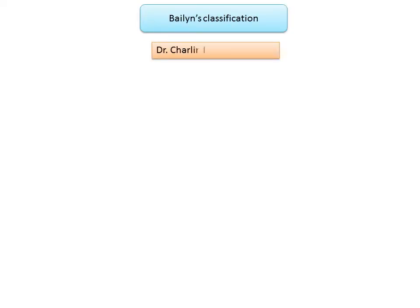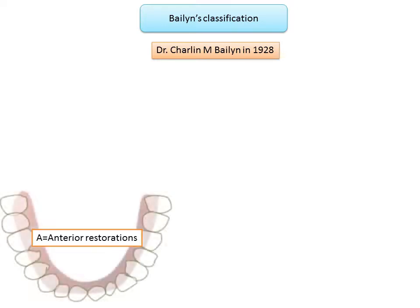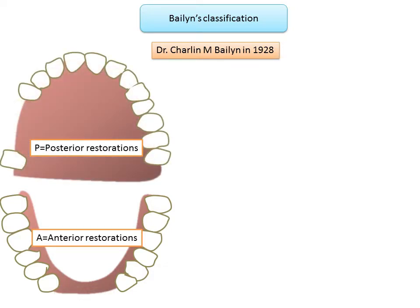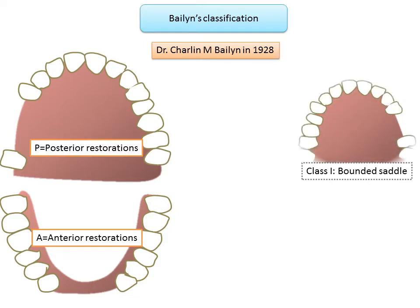The next one is Balen's classification, proposed by Dr. Charlin M. Balen in 1928. It is the first classification which gives importance to support of partial dentures by the remaining tissues. Descriptive letters are used to represent the anterior and posterior restorations: anterior restorations correspond to 'A', where there are saddle areas anterior to the first bicuspid (the premolar); 'P' represents posterior restorations where there are saddle areas posterior to the canine.